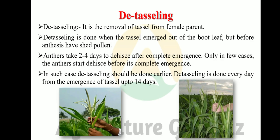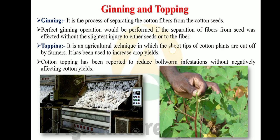Ginning in cotton: Ginning is a process of separating the cotton fiber from the cotton seeds. A perfect ginning operation is performed when the separation of fiber from seed is done without any injury to either the seed or the fiber. In the photograph, we see the ginning machine where cotton fiber is separated from cotton seed.